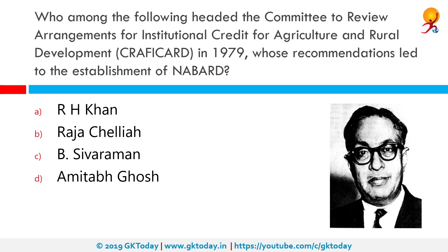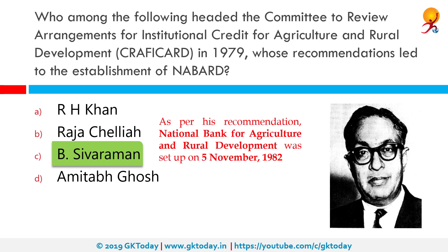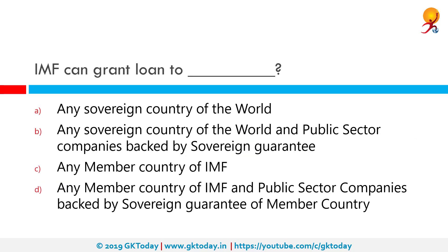Who among the following headed the committee to review arrangements for institutional credit for agriculture and rural development in 1979, whose recommendations led to the establishment of NABARD? The correct answer is B. Sivaraman. The committee, set up by the Reserve Bank of India under the chairmanship of Sri B. Sivaraman, conceived and recommended the establishment of the National Bank for Agriculture and Rural Development (NABARD). The Indian Parliament through Act 61 of 1981 approved the setting up of NABARD. The bank came into existence on 12 July 1982 and was dedicated to the service of the nation by the Honorable Prime Minister Srimati Indira Gandhi on 5th November 1982.